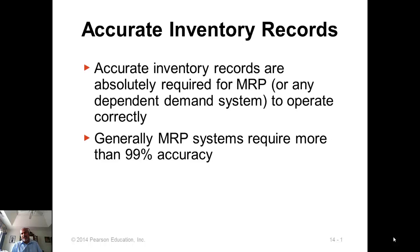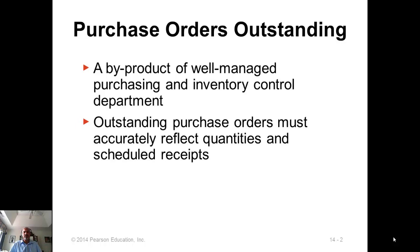The fourth item is the purchase orders outstanding, and this is called scheduled receipts. These are items that are not yet in our stock, but they're going to be in our stock. There is a promised delivery date for these items.